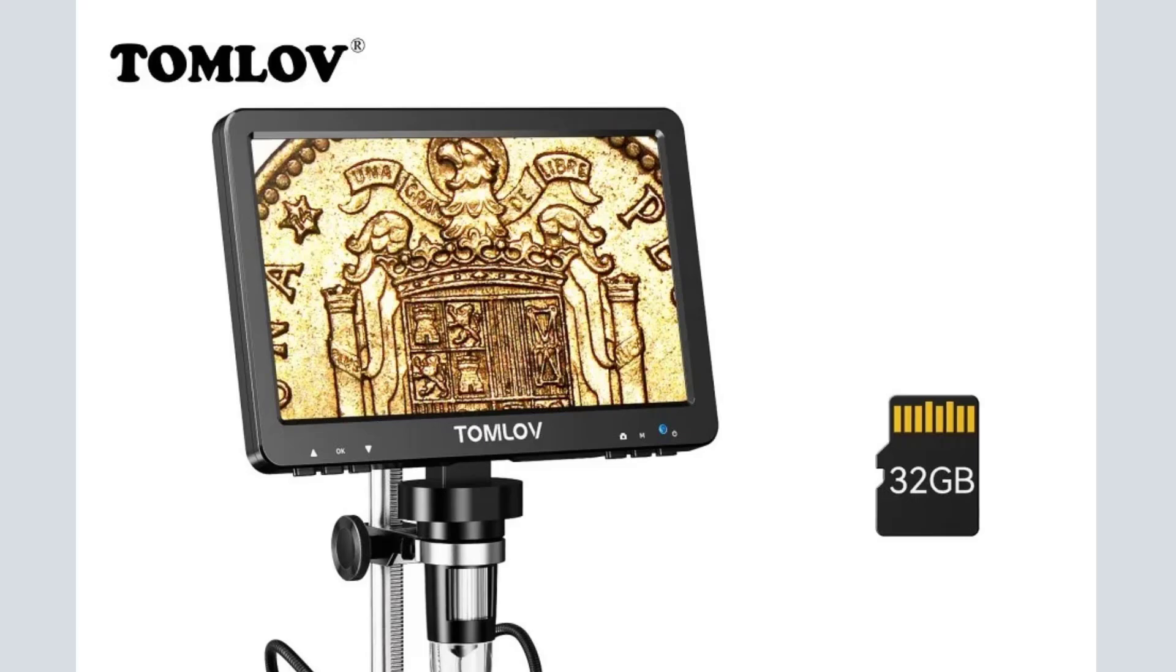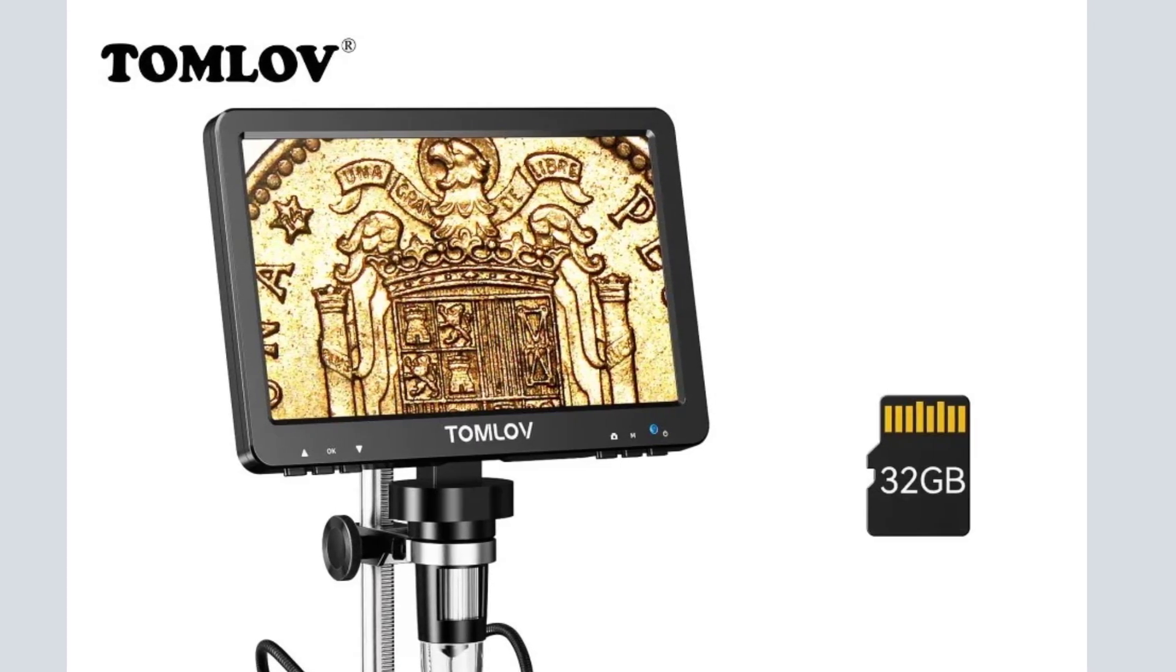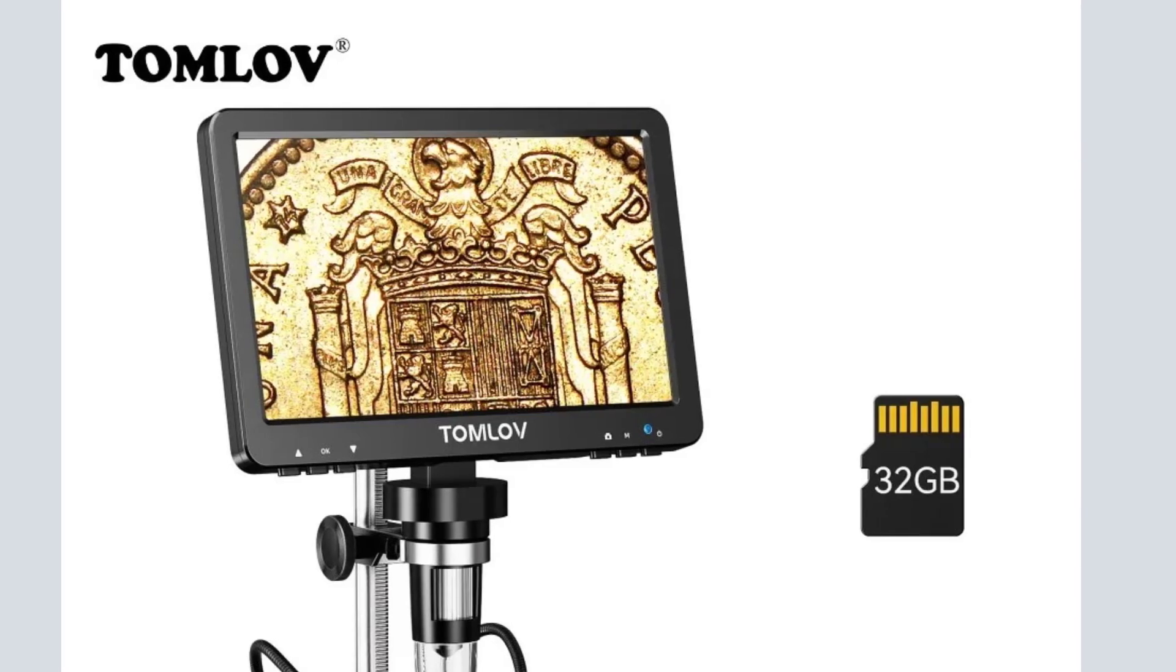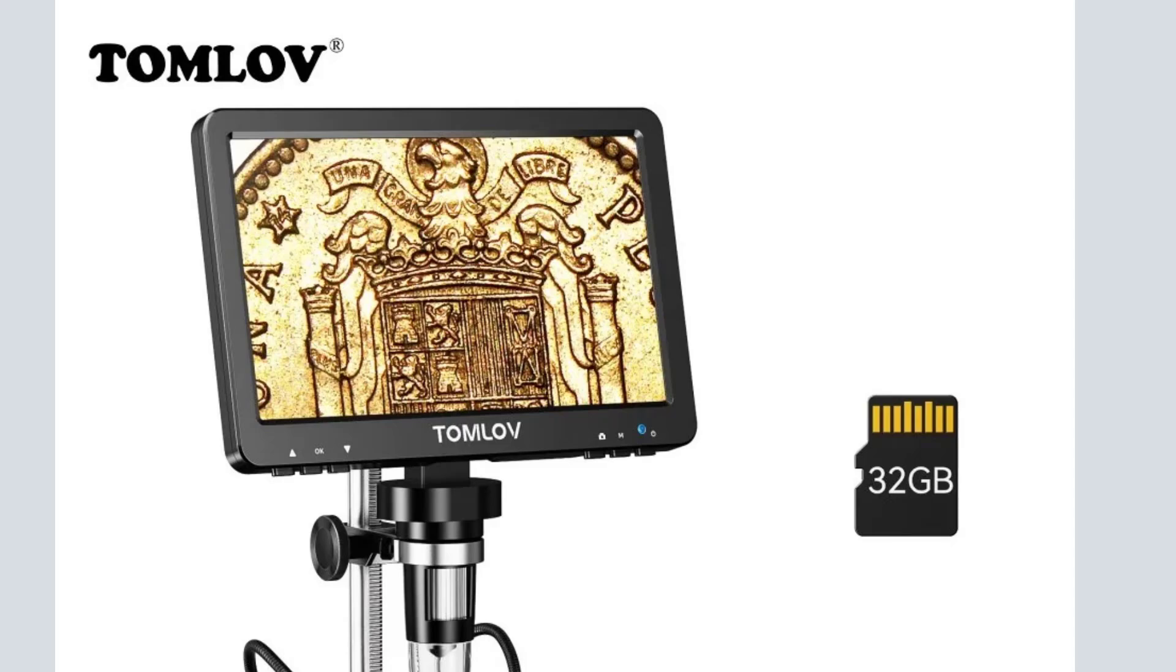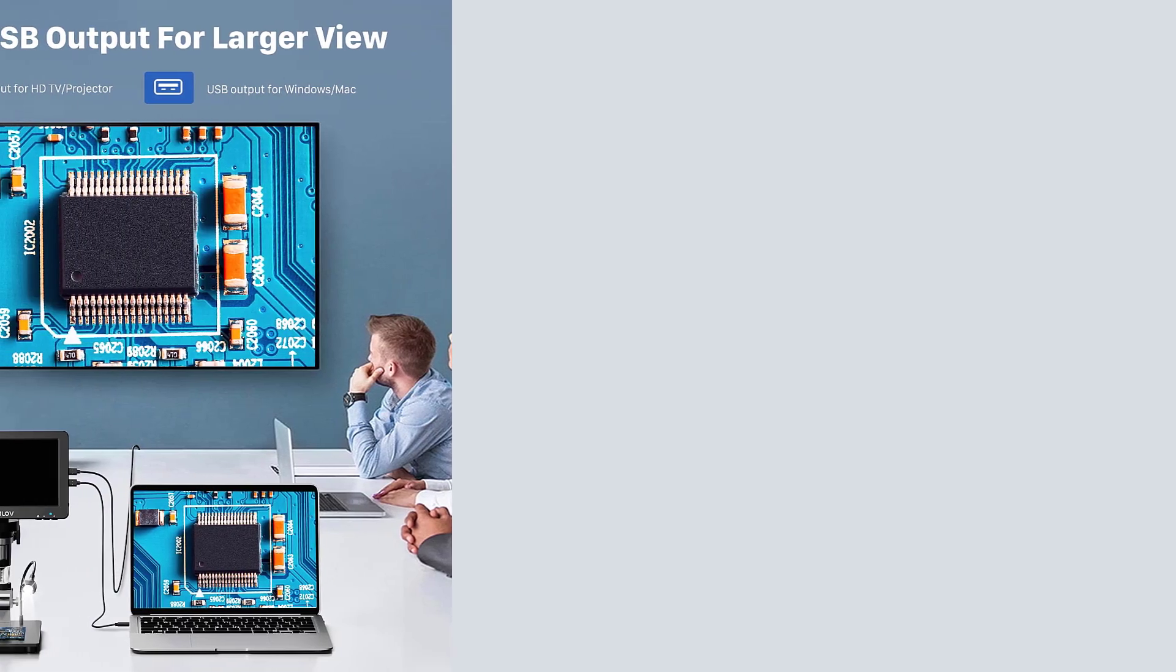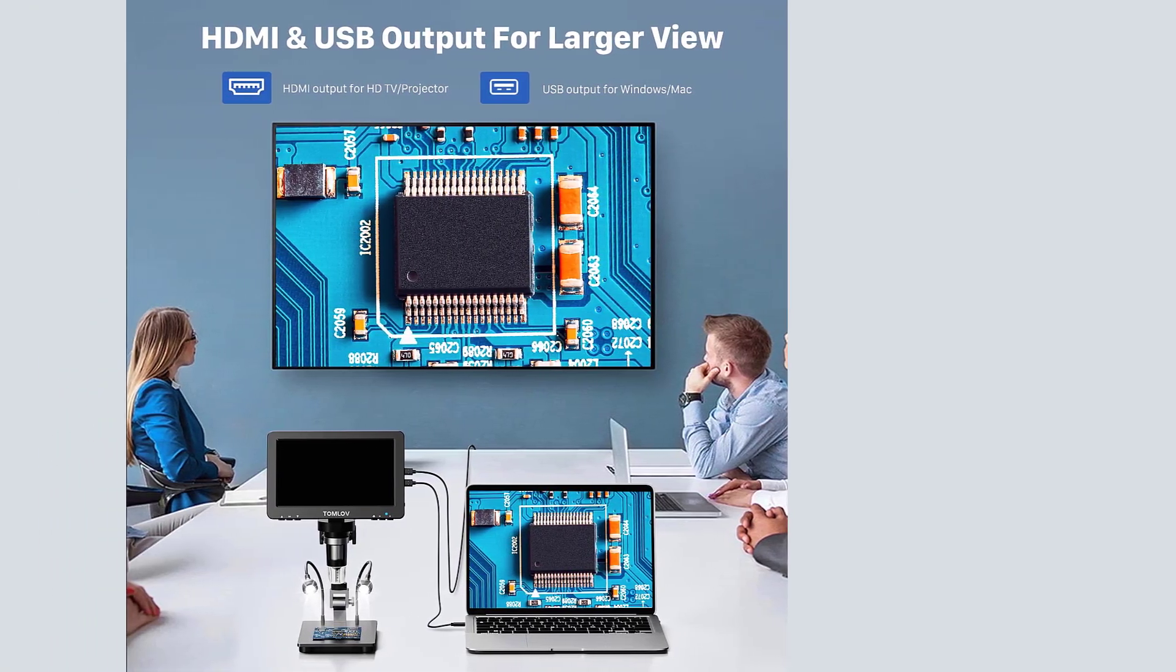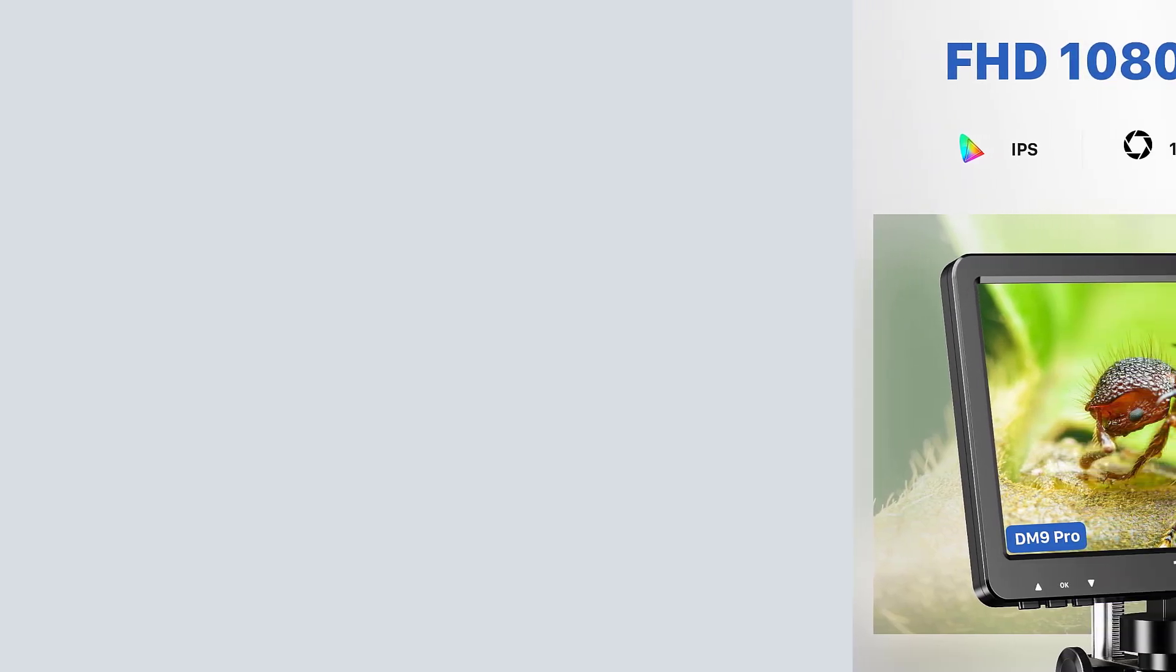Number 1: Tomlov DM9 Pro HDMI Digital Microscope 7-Foot, IPS Screen Microscopes 1200x Entire CoinView, 16MP Professional Soldering Microscopio. Features: 1920x1080p Resolution Tomlov Digital Microscope, 178-degree Super-Wide Viewing Angle, Advanced IPS Glossy Screen, A High-Definition Output Monitor, True-To-Life Color Visual Experience, No Splash Screen and Stuck.